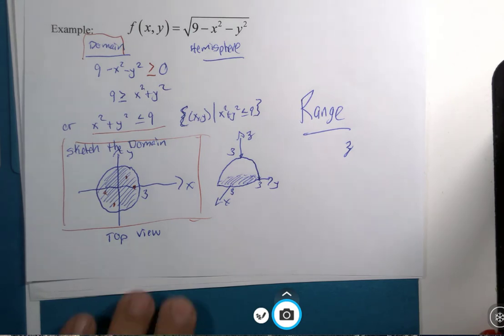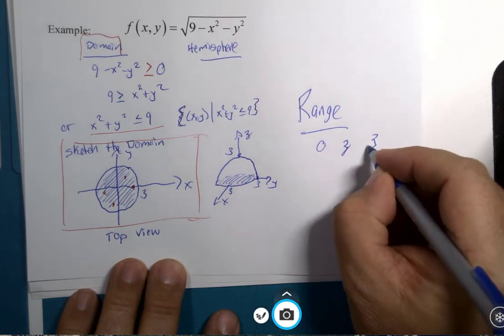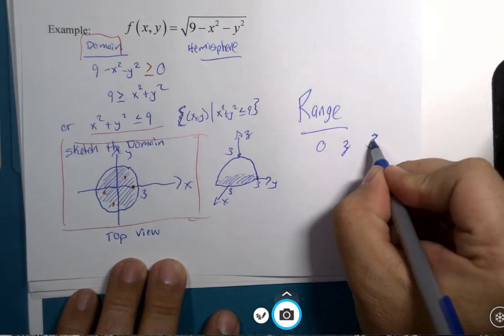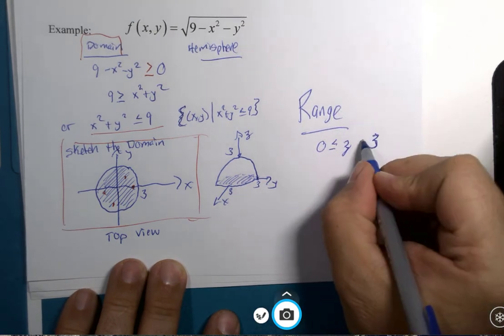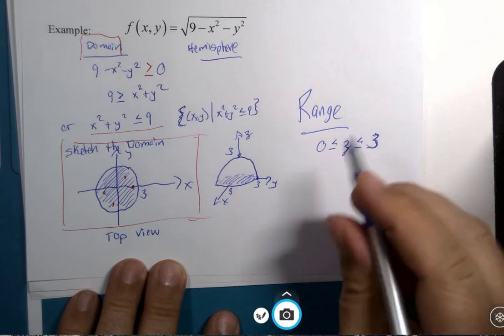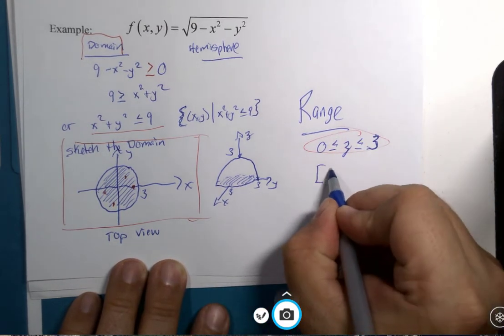Can you guess what z values occur in the graphing of a hemisphere? What is going on with the z values? Well, that's right. They're everywhere from 0 to 3.